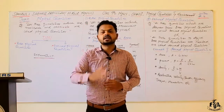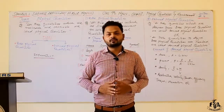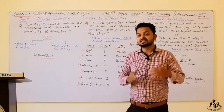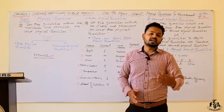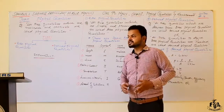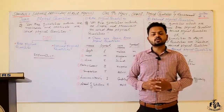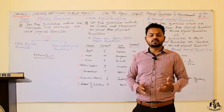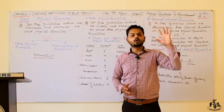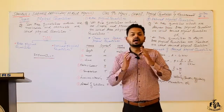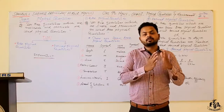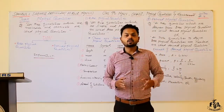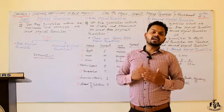There are two types of physical quantities: the first is base physical quantities, and the second is derived physical quantities. Base physical quantities are those quantities which are simple and prominent.